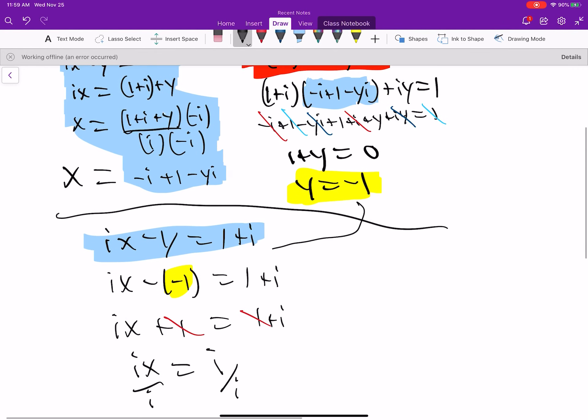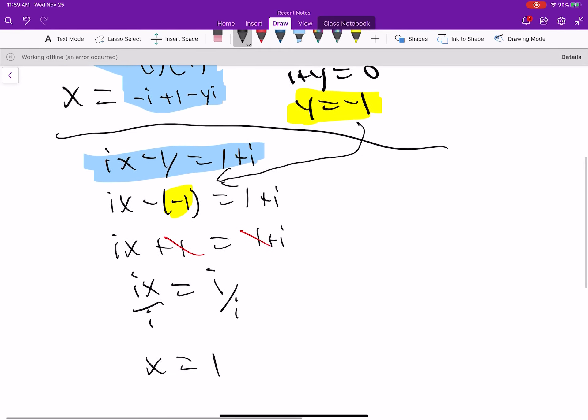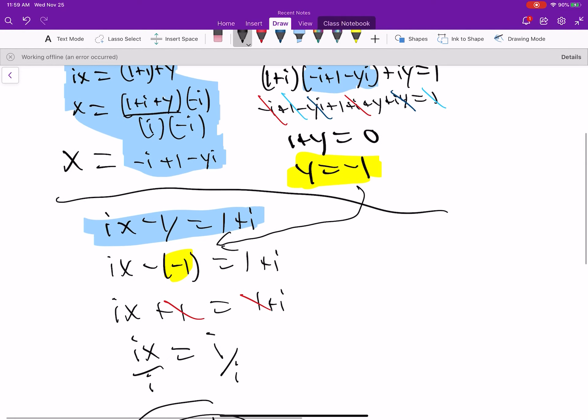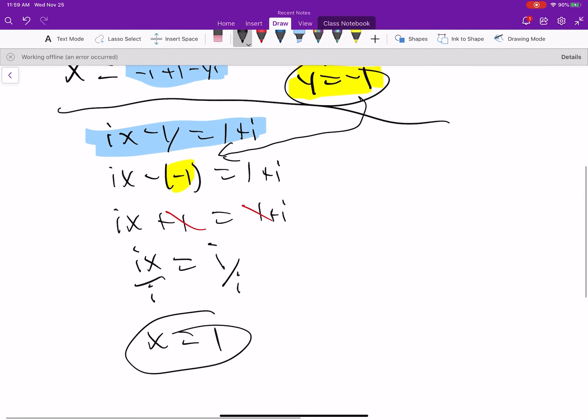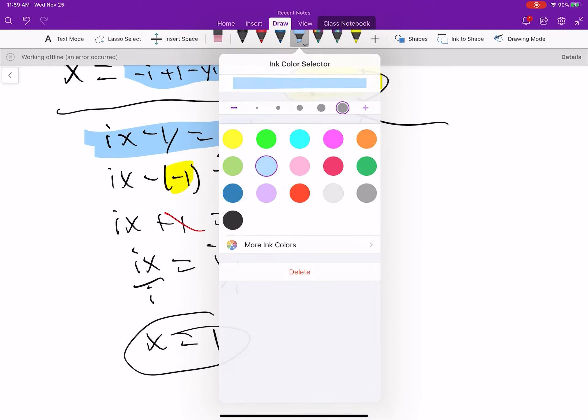So I take that, put it in there, and we do the precalculus thing, and we find out that x is 1. So y is negative 1 and x is positive 1.